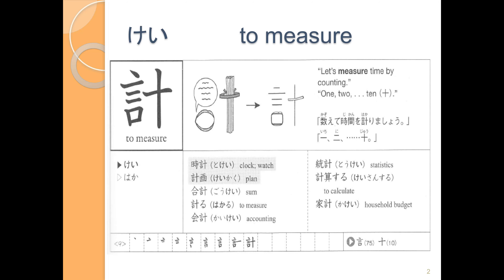This first kanji is けい. This is the けい in とけい, and the けい in けいかく. As you can see, it's made up of the radical for 'words' on the left and the number kanji じゅ on the right.